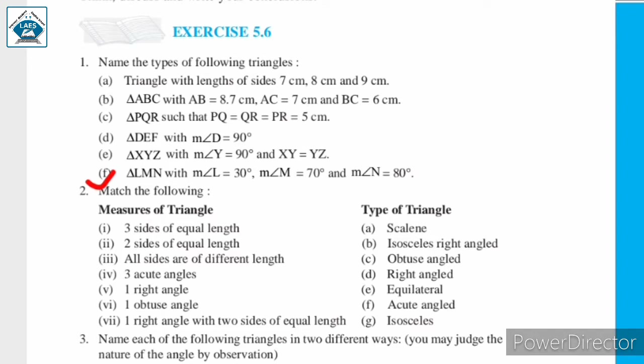Next, triangle LMN with measure of angle L = 30 degrees, measure of angle M = 70 degrees, and measure of angle N = 80 degrees. All three angles of triangle LMN are less than 90 degrees, that is, they are acute angles. Since all three angles are acute, triangle LMN is an acute angled triangle.